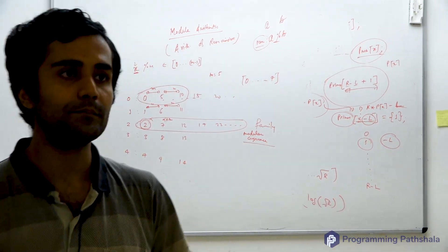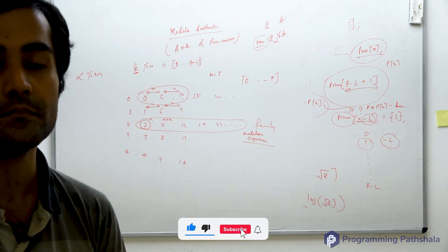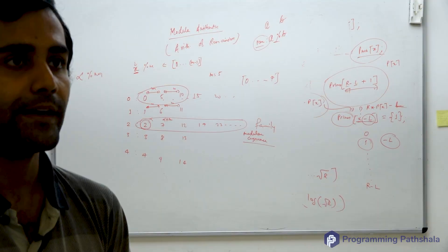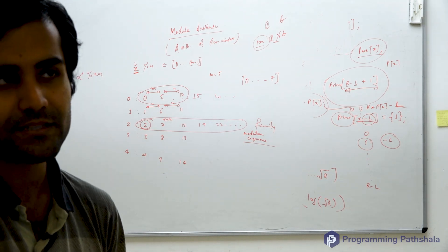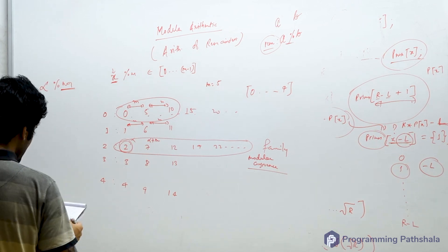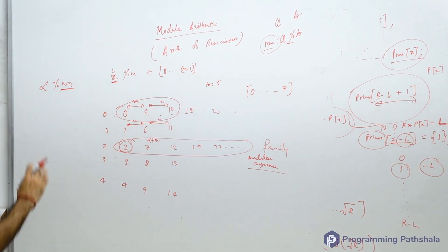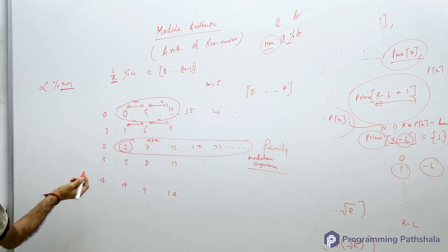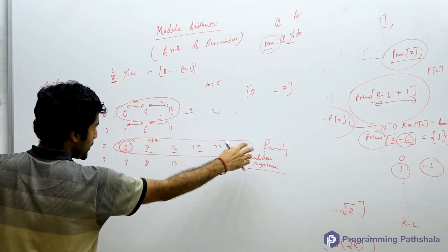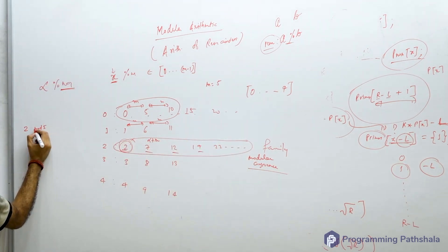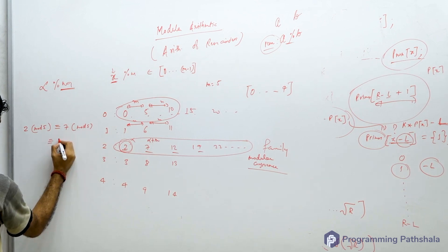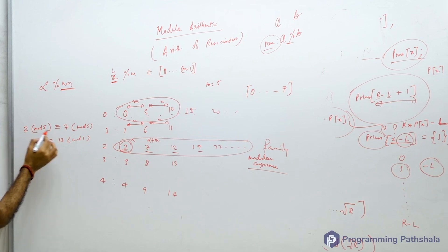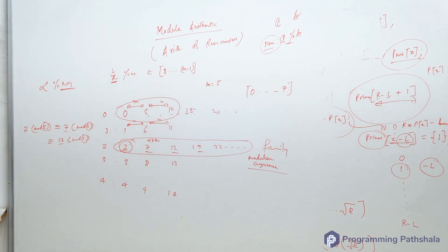All these numbers, because they have the same modulus value when taken mod with m, are said to have modular congruence with each other. There is a mathematical symbol used to represent it. For example, 2, 7, 12, and 17 are in a particular modular congruence family: 2 mod 5 is the same as 7 mod 5 is the same as 12 mod 5. This symbol shows that 2, 7, 12, and all similar numbers have modular congruence with respect to m equals 5.